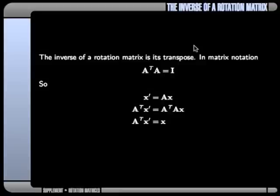Now, of course you know that the inverse of a rotation matrix is its transpose, so if we multiply A transpose by A, we get just an identity matrix. What that means is that we can take our original rotation here, we can multiply both sides by the transpose of A, and we end up with the inverse rotation down the bottom here.